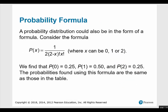A probability distribution could also be in the form of a formula. Consider this formula for our coin toss example: P(x) equals 1 divided by 2 times the quantity (2 minus x) factorial times x factorial, where x can be 0, 1, or 2. We find that P(0) = 0.25, P(1) = 0.50, and P(2) = 0.25. We'll use this formula in chapter 6, so don't stress over factorials right now — the probabilities found using this formula are the same as those in the table.